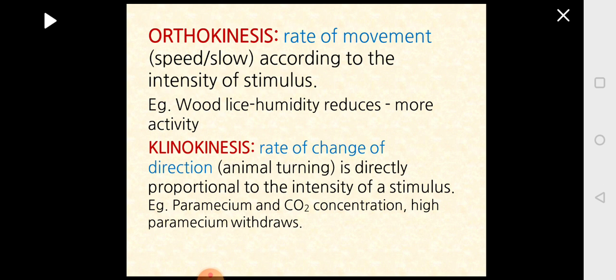Under kinesis, there are two types. The first is orthokinesis: when an animal is exposed to a stimulus, it starts moving, and the rate of movement is directly proportional to the intensity of the stimulus — mild stimulus means slow movement, strong stimulus means fast movement. For example, wood lice prefer humidity; if humidity reduces, they show random movement until reaching a suitable place.